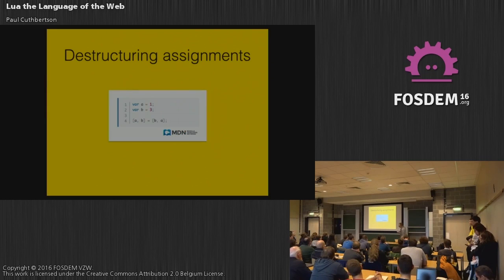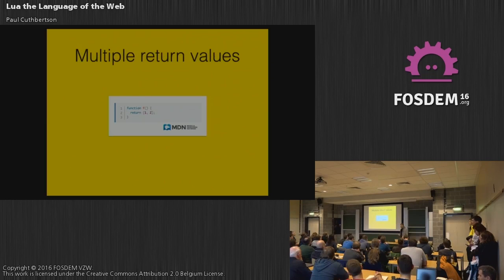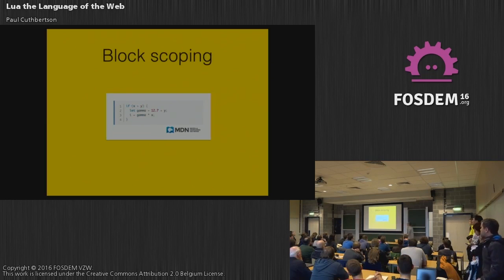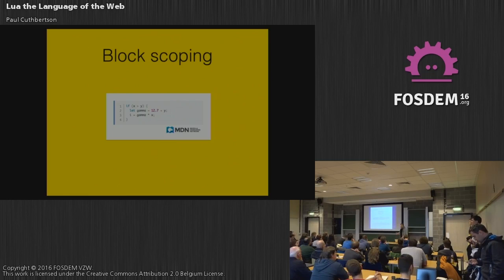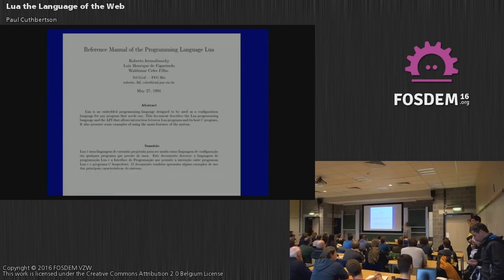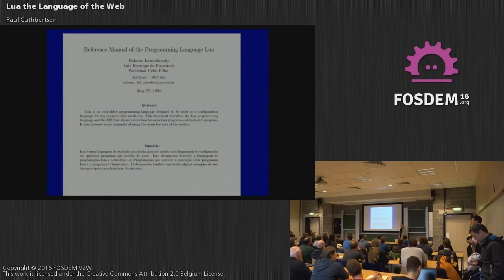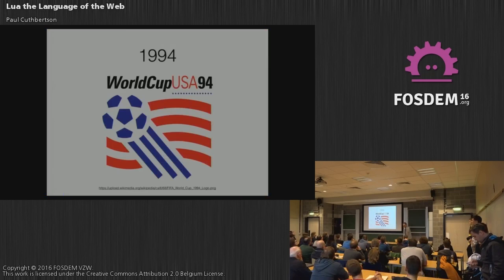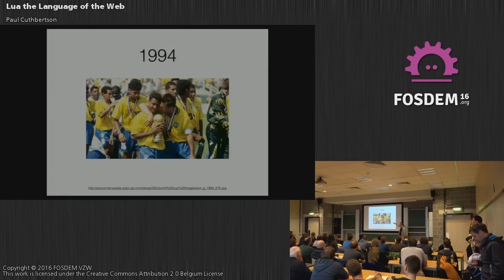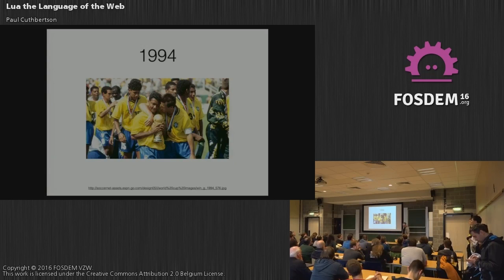Lastly, destructuring assignments — obviously familiar with these — multiple return values, and block scoping via the LET keyword. They all came out with the initial version of Lua, with a new version number, but it was 1994 — the year that England didn't qualify for the World Cup unfortunately. So good year for Brazil in 1994: Lua and the World Cup.